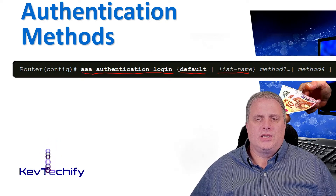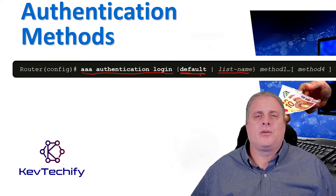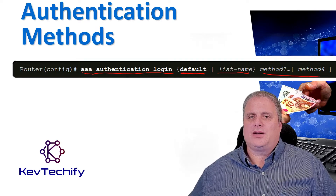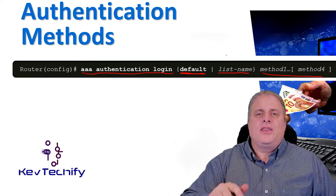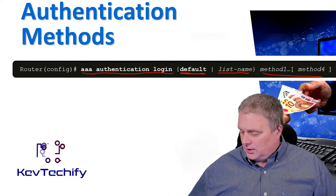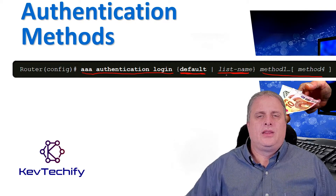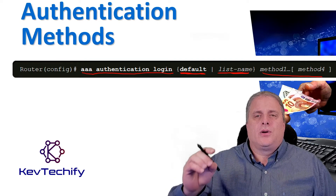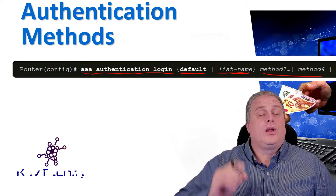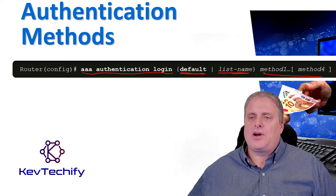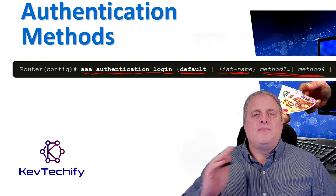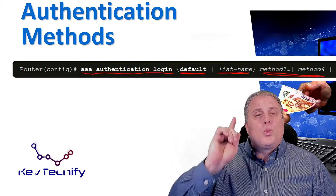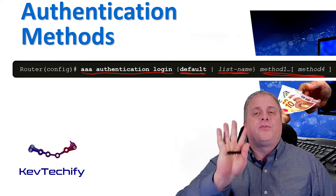The default uses the listed authentication methods as the default list of methods when a user logs in. The list name is a character string — that's the name of your list — identifying the list of authentication methods activated when a user logs in. The methods identify a list that the AAA authentication process will query in the given sequence. At least one method has to be specified, with a maximum of four methods.